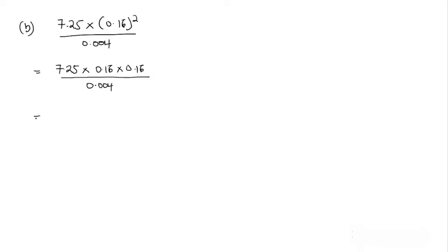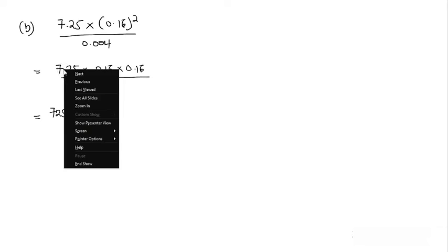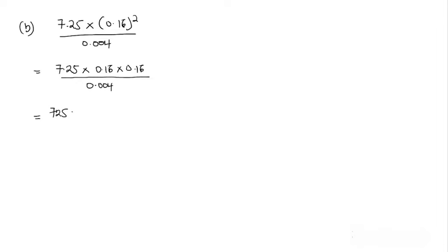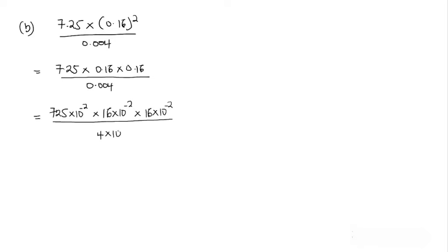We rewrite everything in standard form. Seven point two five: we move the decimal two places, so it becomes seven hundred twenty-five times ten to the power negative two. Zero point one six becomes sixteen times ten to the power negative two, because we move the decimal two places. The same for the second zero point one six: sixteen times ten to the power negative two. Zero point zero zero four becomes four times ten to the power negative three.